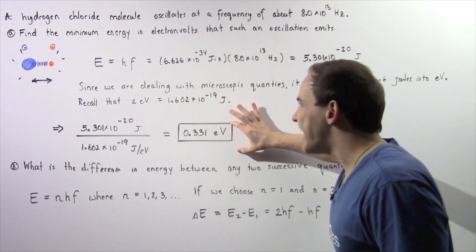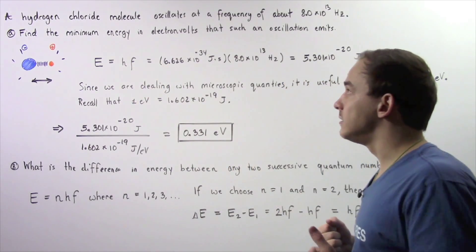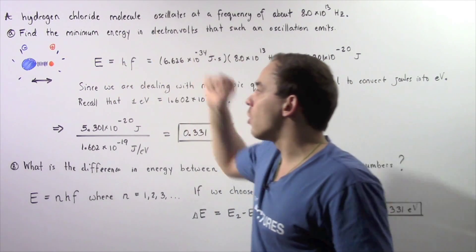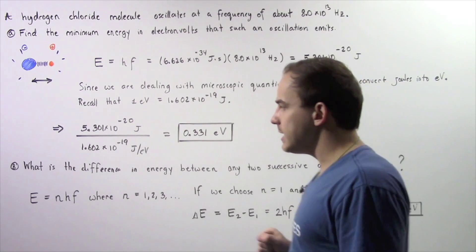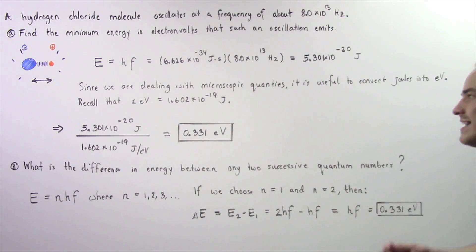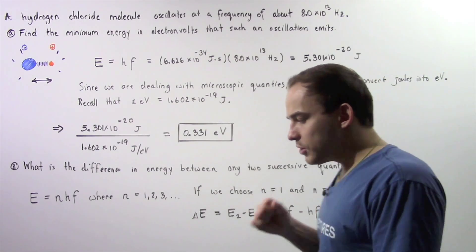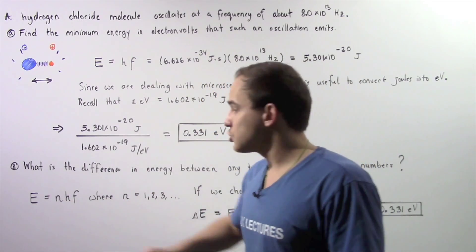So this represents how much energy is released or absorbed in an oscillation of the hydrogen chloride molecule. Now, let's move on to Part B. What is the difference in energy between any two successive quantum numbers? Now recall, in the previous lecture, we used the following equation.